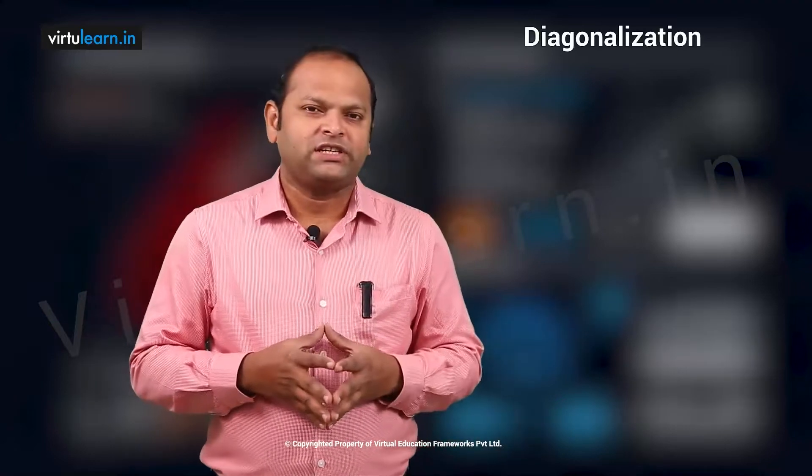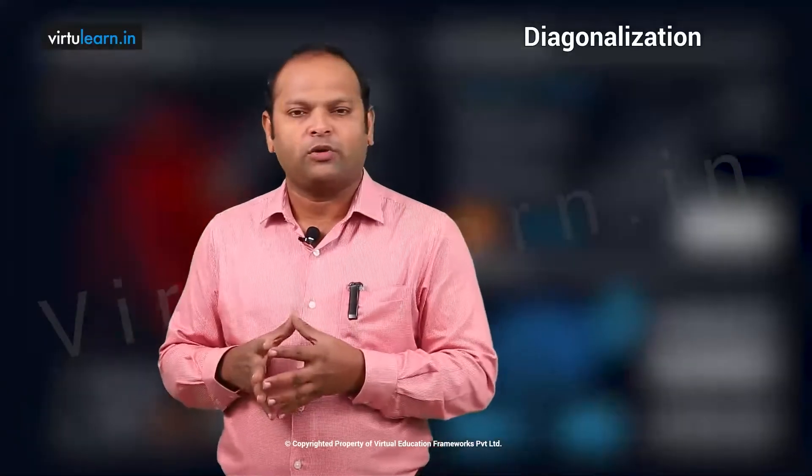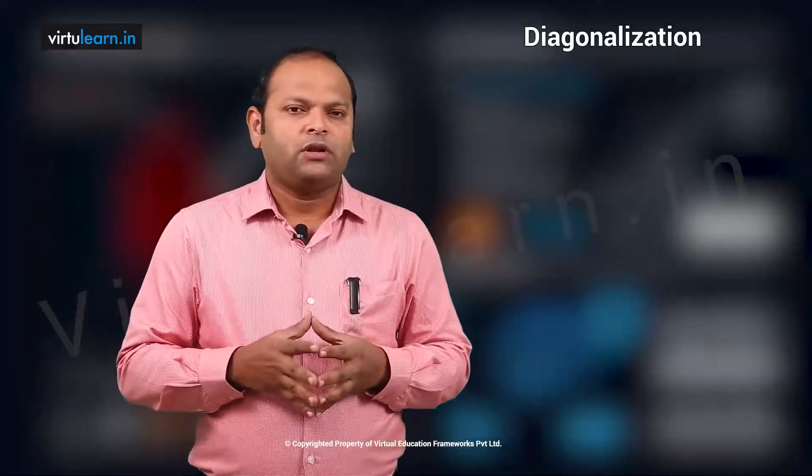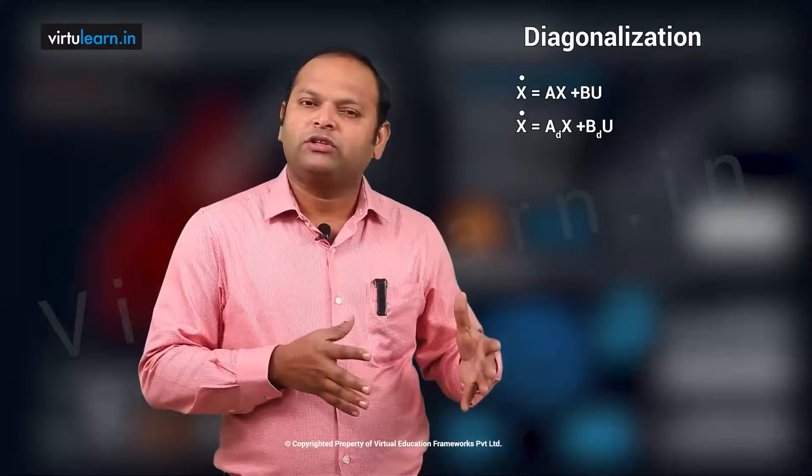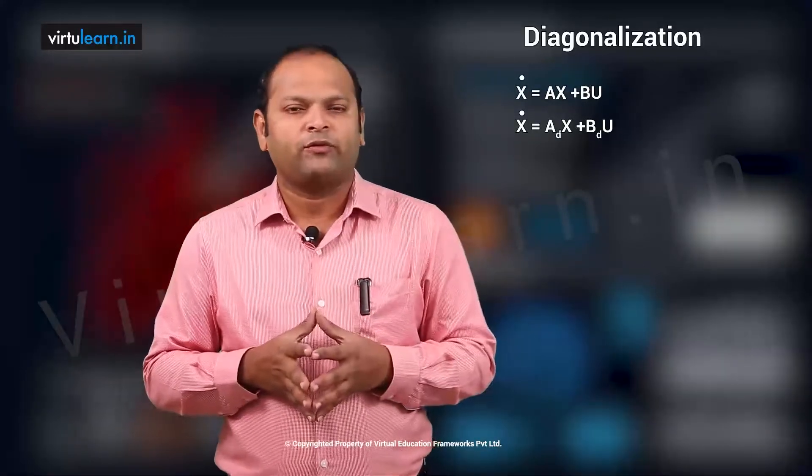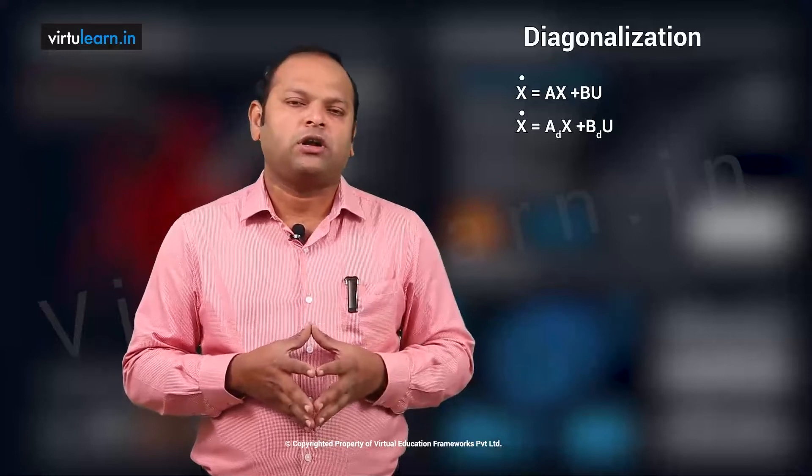In state space model, we can have a facility to convert one particular model to another particular model. So for example, if I have one state model as x dot is equal to ax plus bu, they can convert that into a diagonal form of the representation. So with the help of the model matrix, the process is called diagonalization.